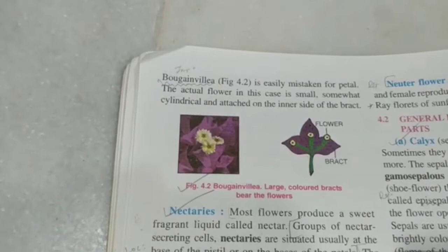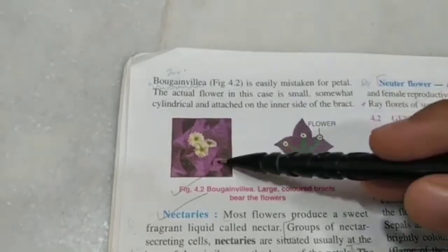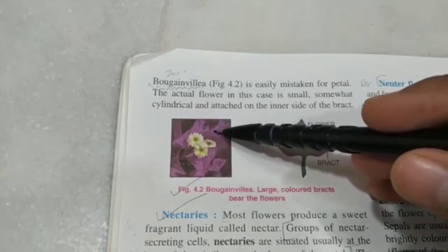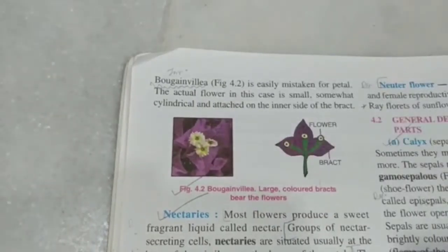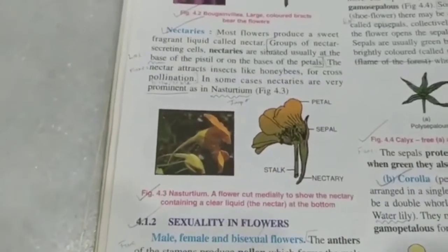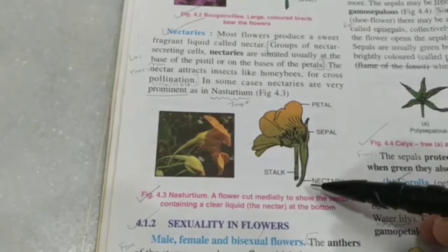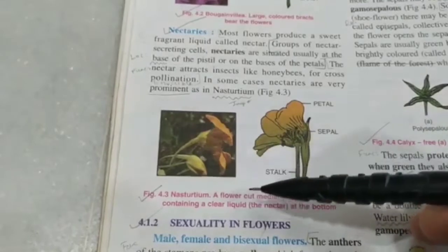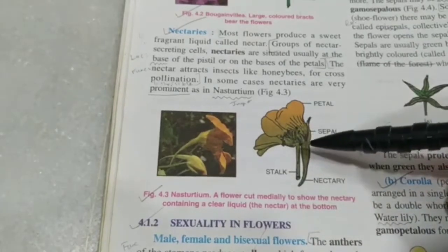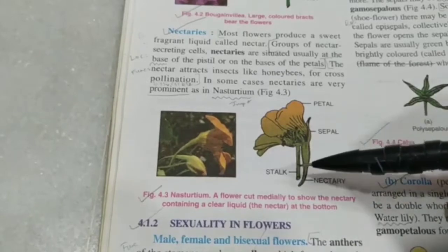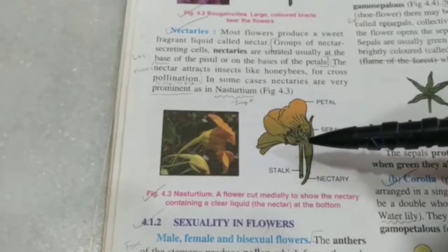Sometimes flowers grow in the axil of a leaf-like structure. This leaf-like structure can be colorful and mistaken for a petal, but it is actually called a bract. The plant bougainvillea is a well-known example. Another non-essential but very useful part is the nectary. Many flowers have nectaries at the base — a group of nectar-secreting cells that attract bees and other insects. When bees travel into the flower, pollen grains may stick to their body or fall onto the stigma, helping in pollination. Flowers like Nasturtium have nectaries to assist in insect pollination.